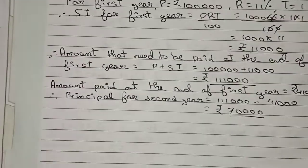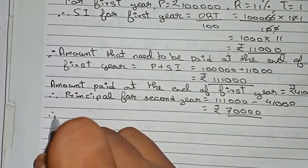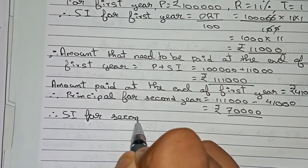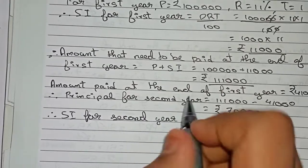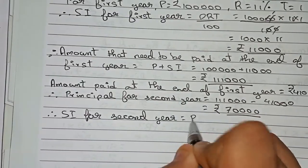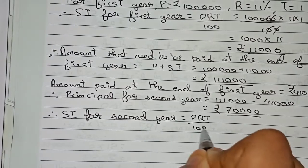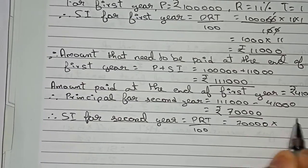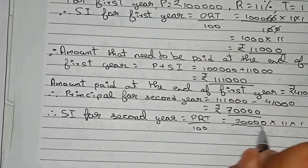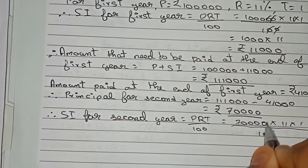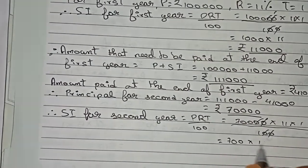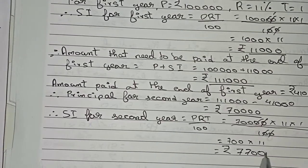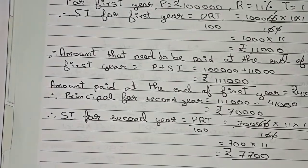Now we find the interest for the second year using the same formula: PRT by 100. We put in the values — principal is 70,000, rate is 11 percent, time is 1 year, divided by 100. Cutting the zeros, it remains 700 into 11, which equals rupees 7,700. Therefore, this is the interest for the second year.